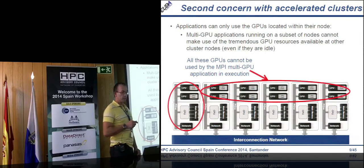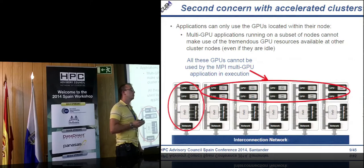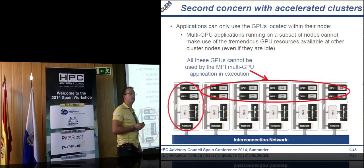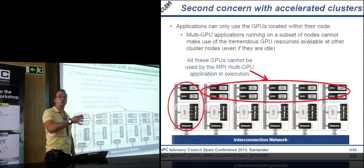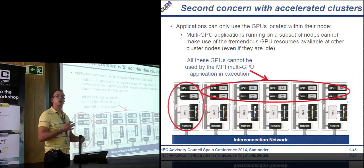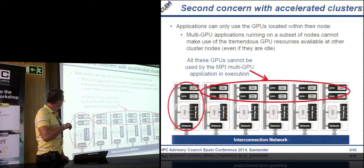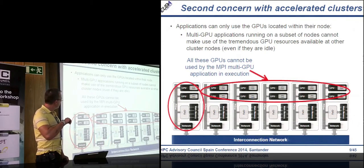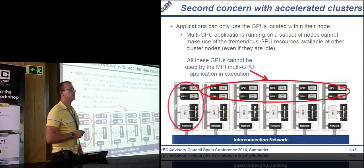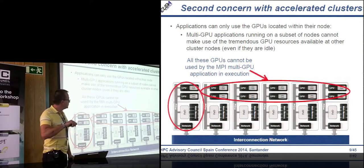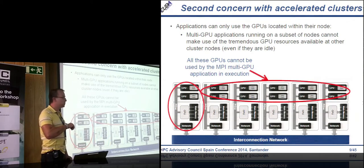Another concern: what happens with applications that can use several GPUs? Many problems can be parallelized so that more GPUs means faster computation. In the traditional way, an application running on one node can only use the GPUs inside that node. The GPUs in other nodes, even if idle, cannot receive data and kernels from that application.